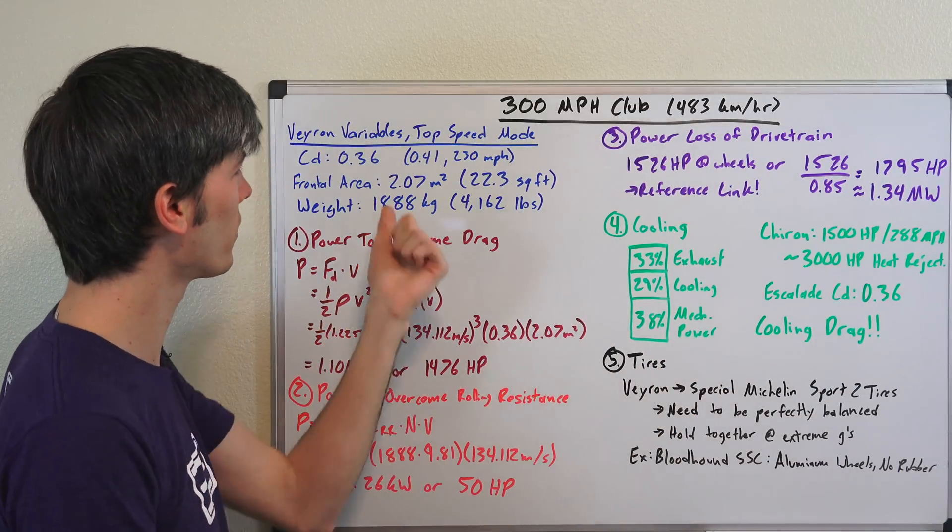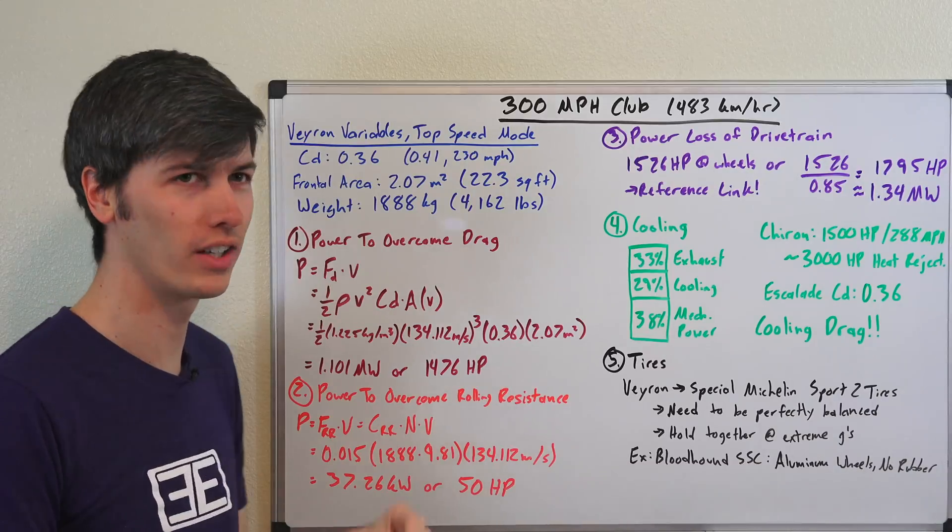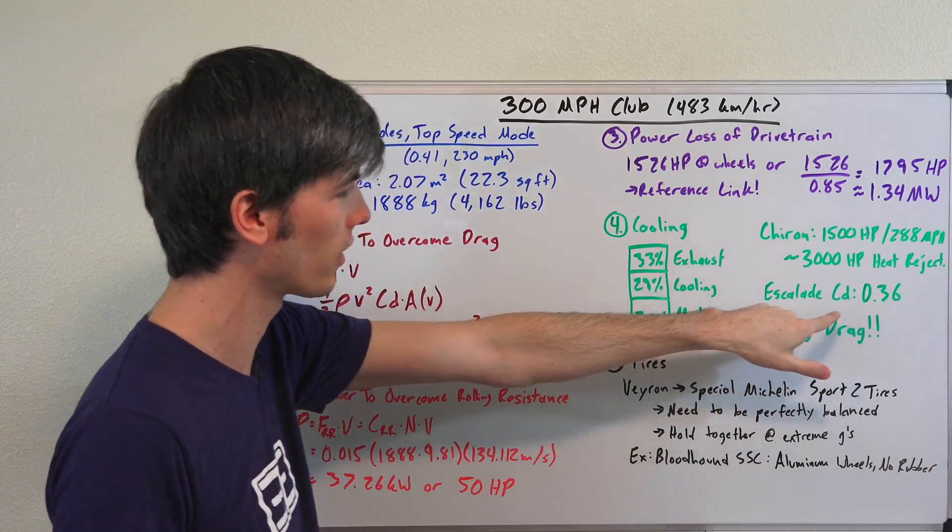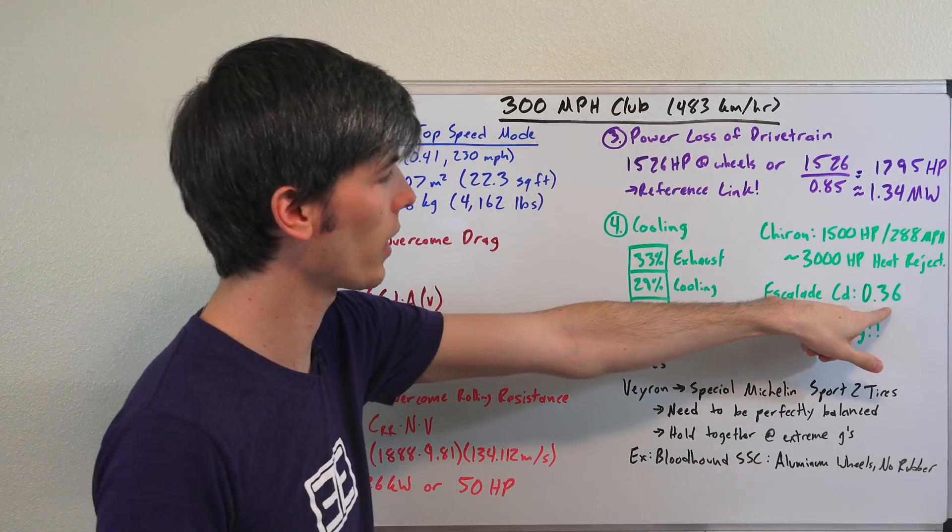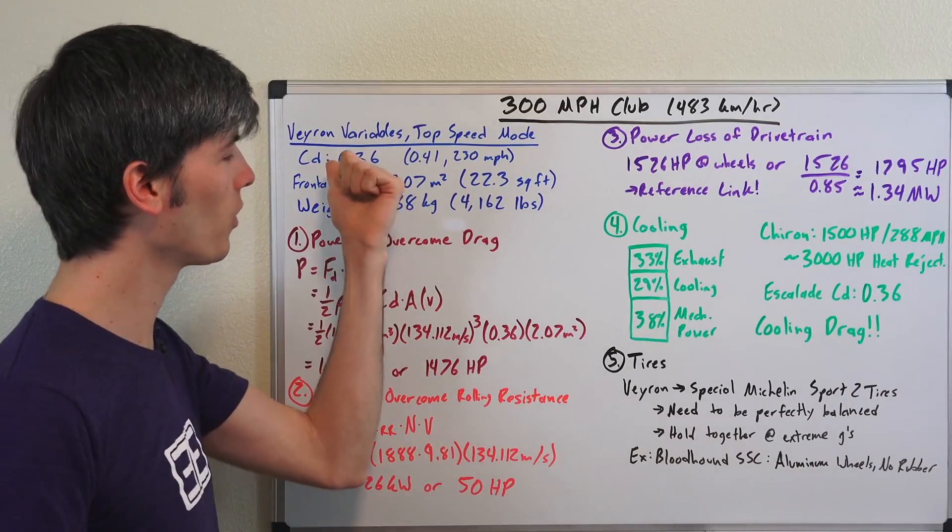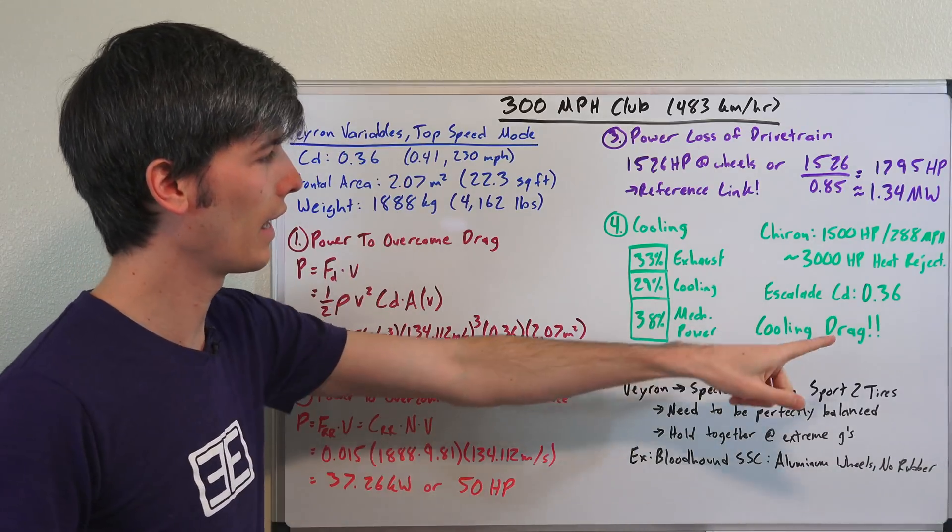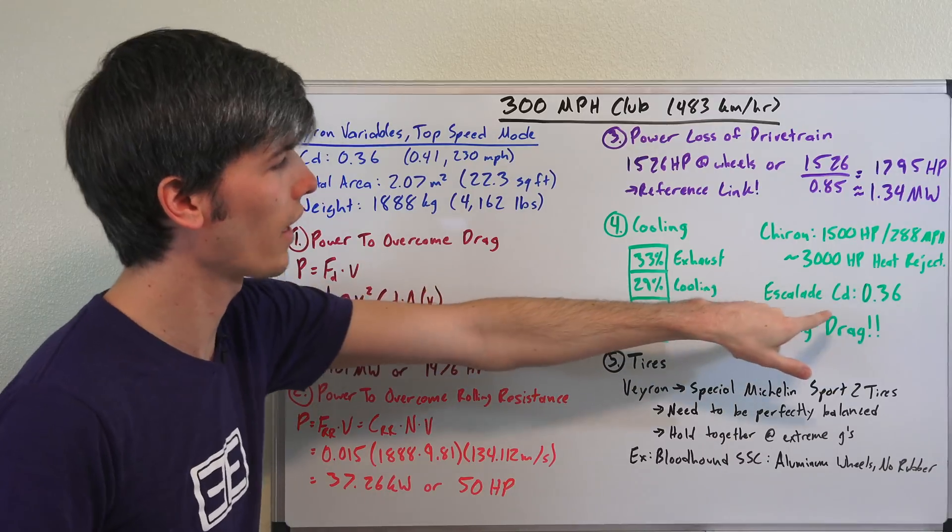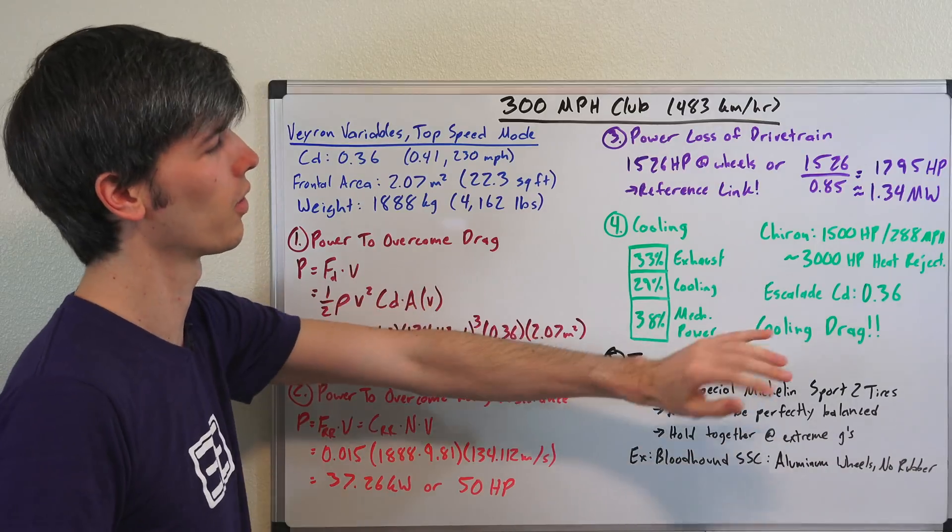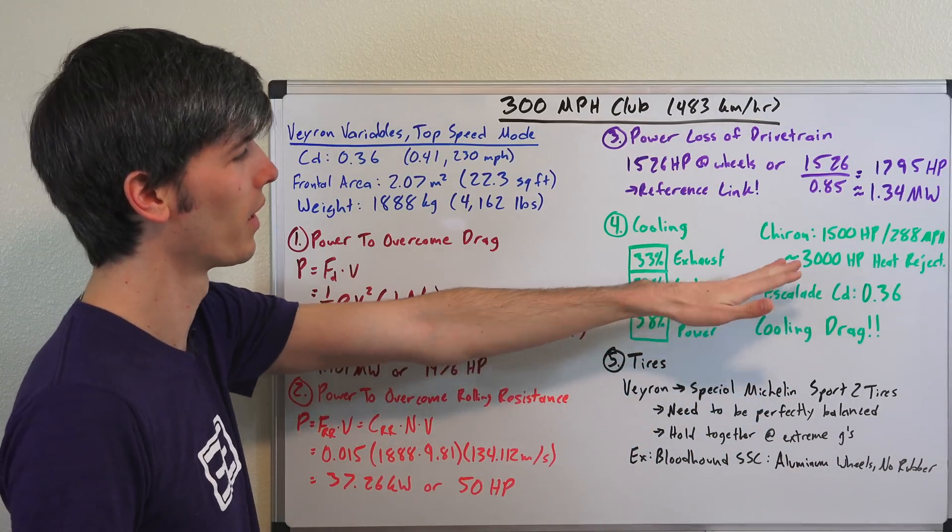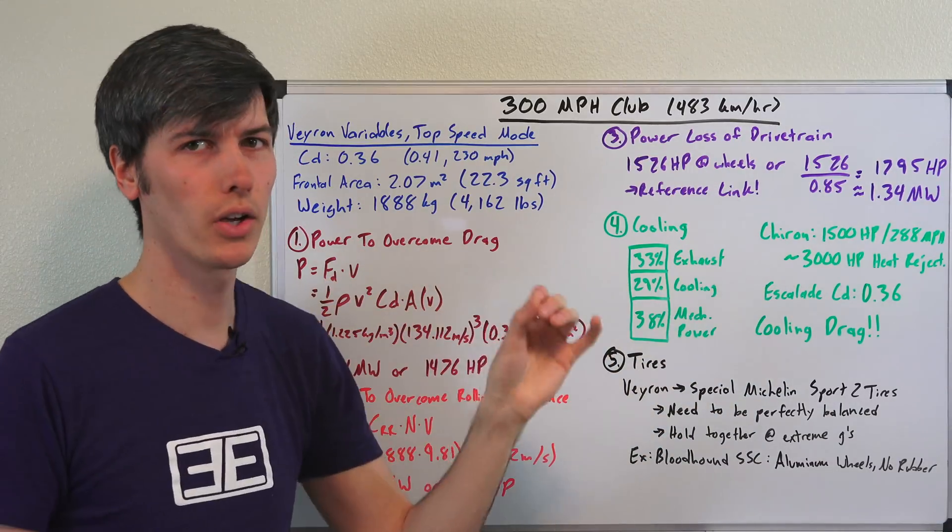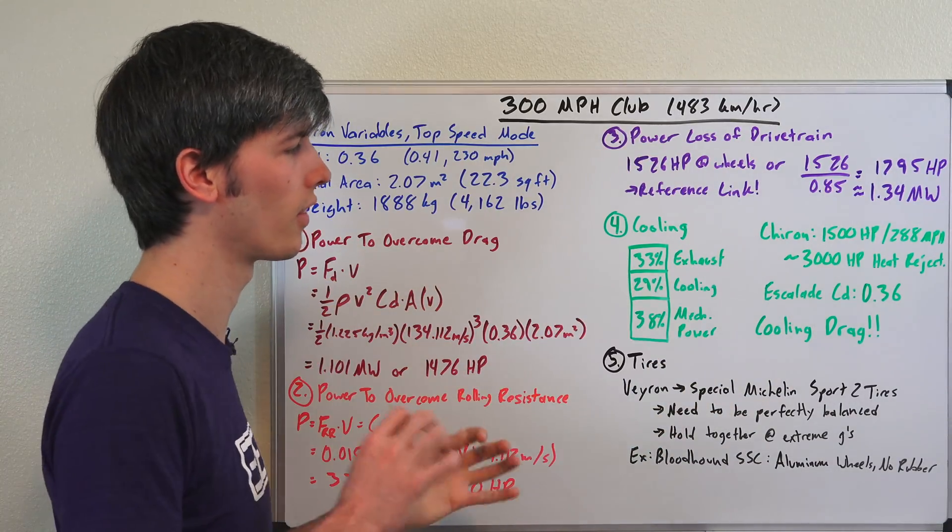And so part of the reason why this has such a crappy drag coefficient, it's actually extremely impressive. You just don't realize it because it looks the exact same as a Cadillac Escalade. Cadillac Escalade has a drag coefficient of 0.36, so does a Bugatti Veyron in top speed mode. The reason why this is so high and why this one isn't - this actually isn't that good for an Escalade, this is extremely good for a Chiron. They certainly know what they're doing, but the point is you're gonna have a significant amount of drag just because of cooling when you have engines this powerful.